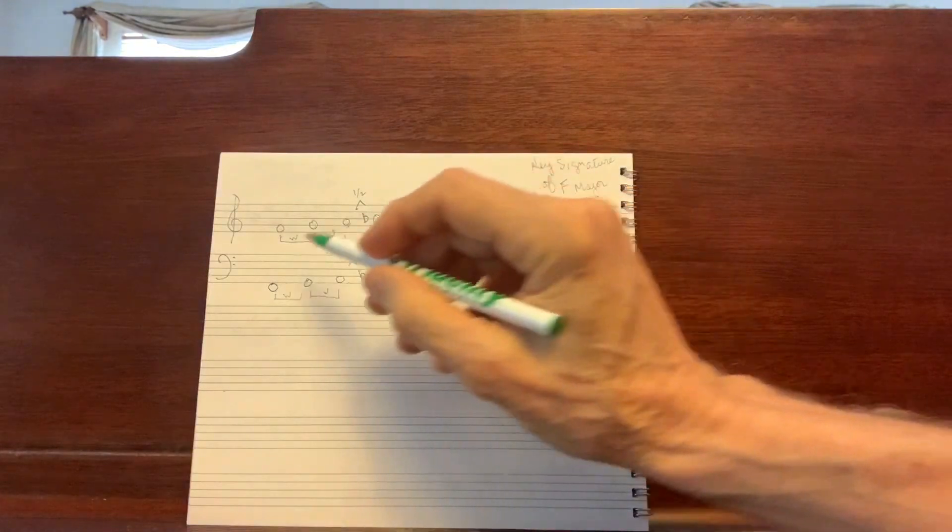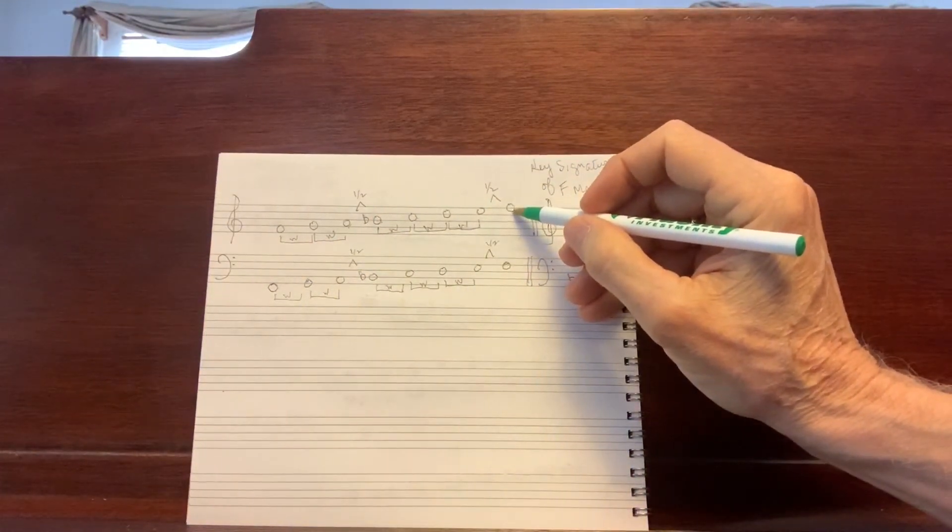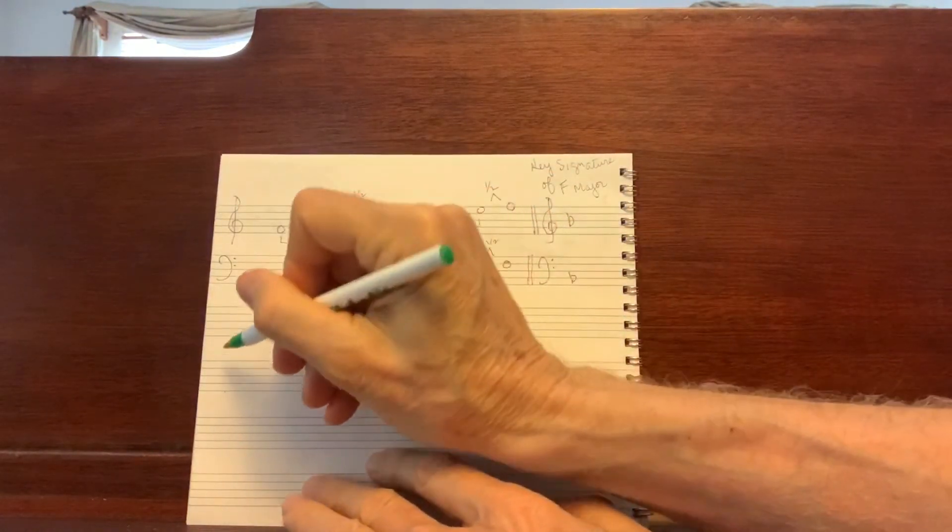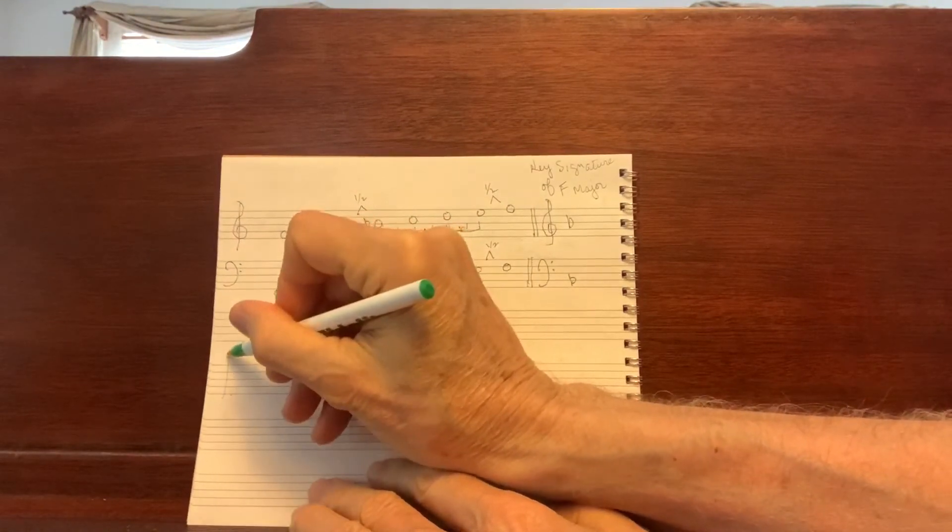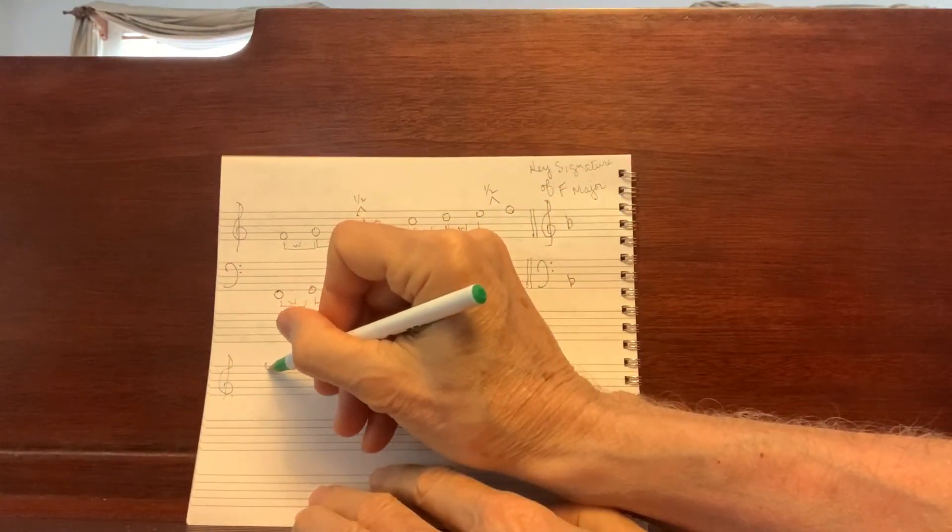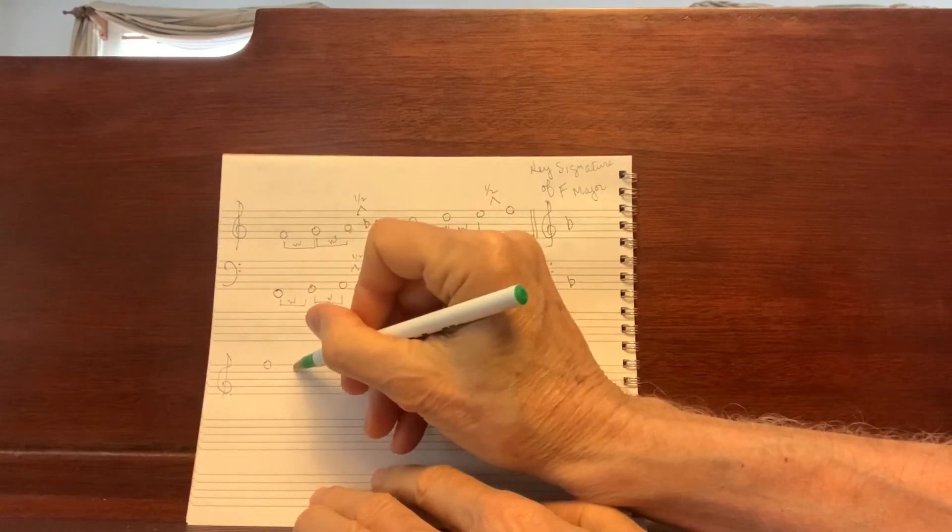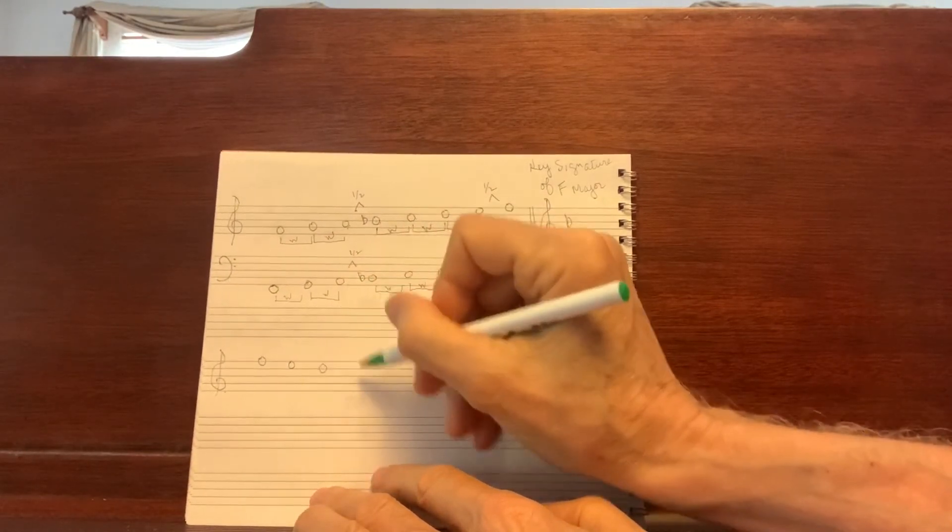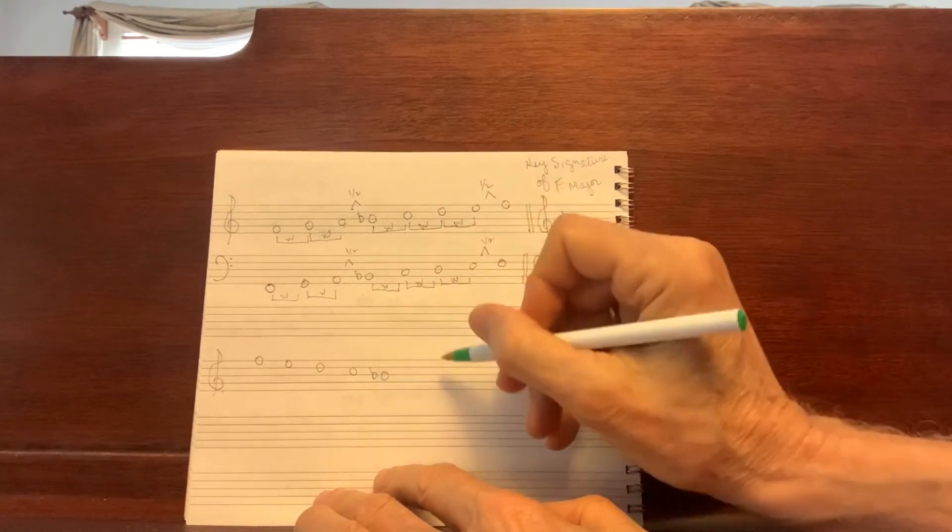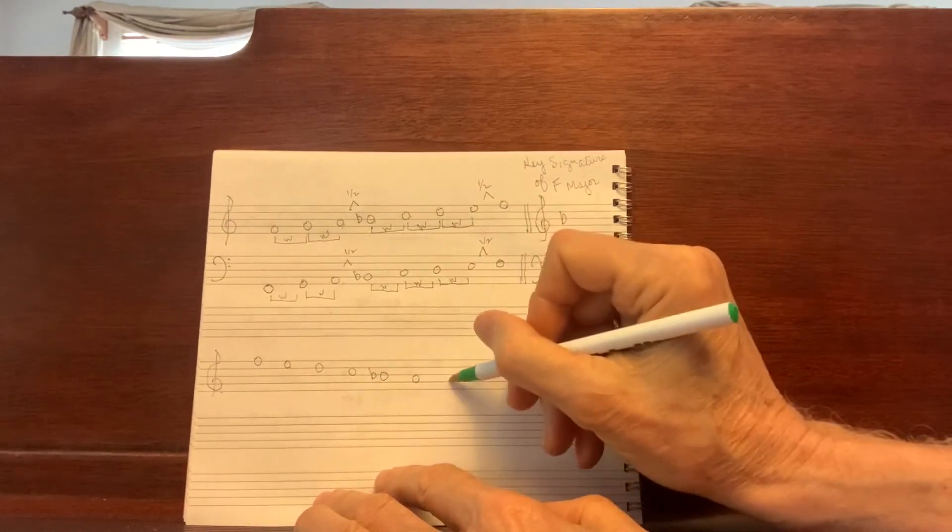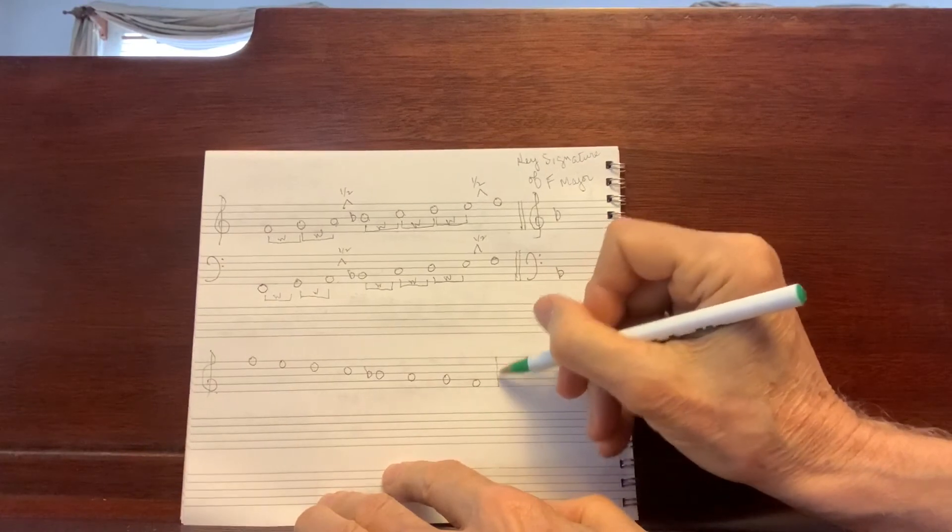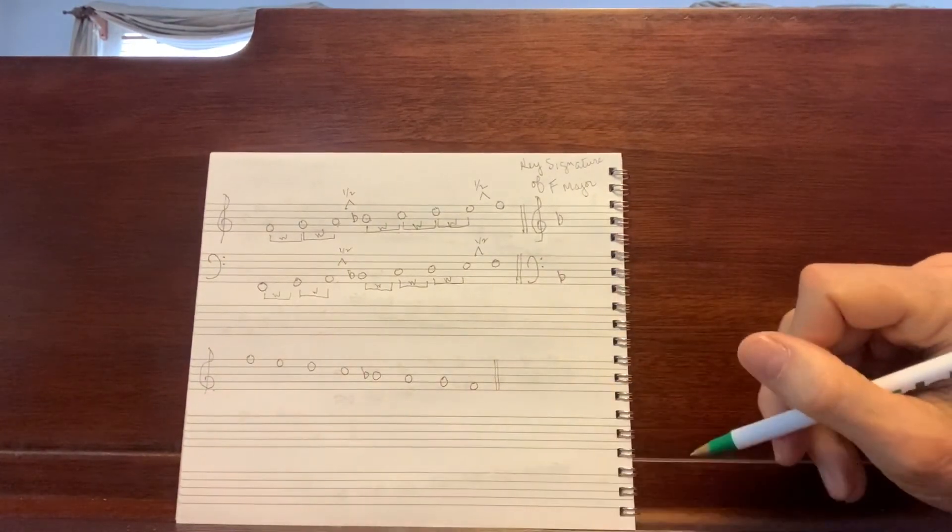And now we're going to write the F scale descending in the treble clef from this F: F, E, D, C, B flat, etc. We'll come down here. G clef. F on the top line. F, E, D, C, B. Make it a flat because it is. A, G, F, double bar.